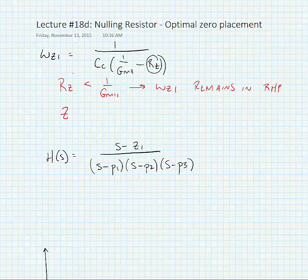However, if we were to make Rz greater than 1 over gm2, omega z1 moves to the left half plane and of course gives us a better phase shift. So this is what we're going to do.